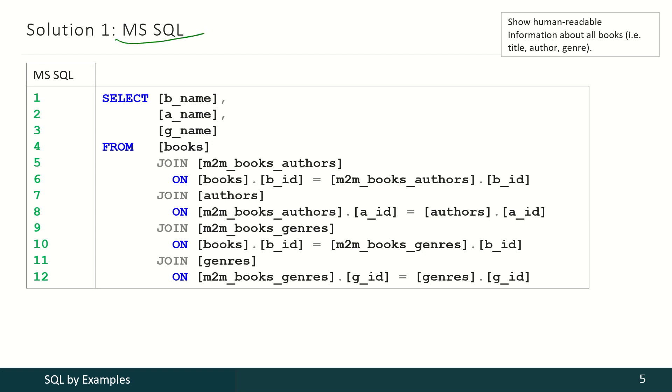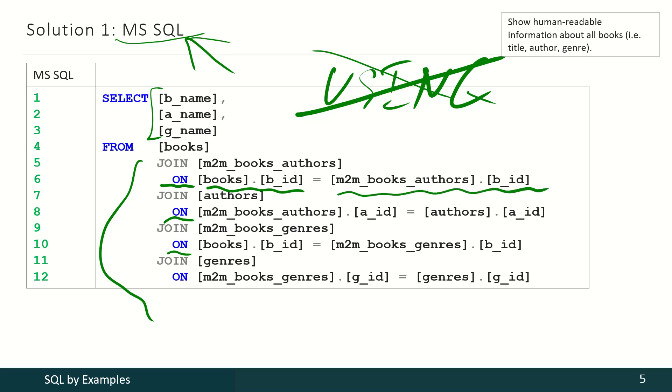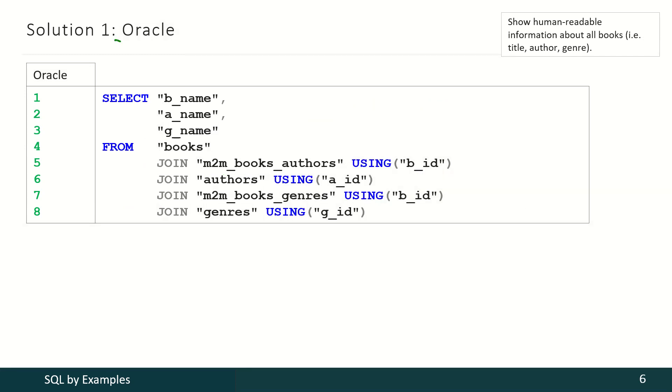In Microsoft SQL Server, we select the same data from the same tables, but unlike MySQL, this DBMS does not support that USING keyword. So we cannot use it here and we have to use classic join syntax with ON and then the reference to the field of the first table and then the reference to the field of the second joining table. And Oracle supports that USING keyword, so this solution for Oracle is exactly the same as the solution for MySQL.